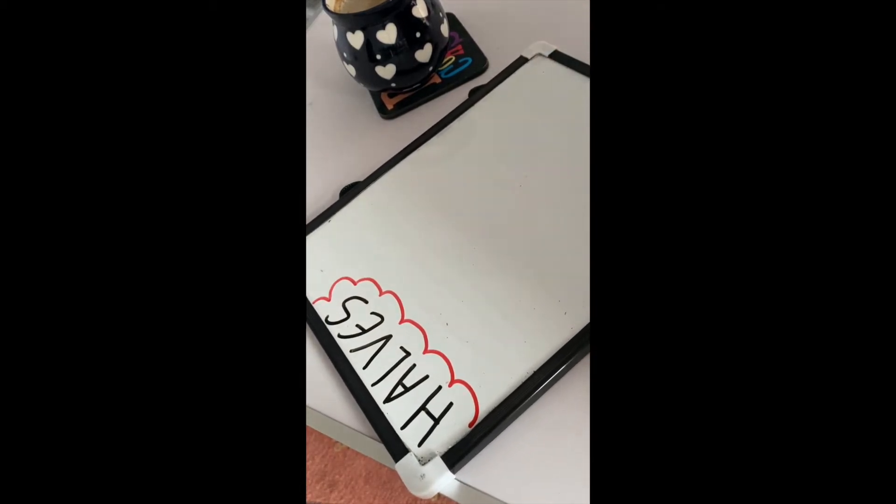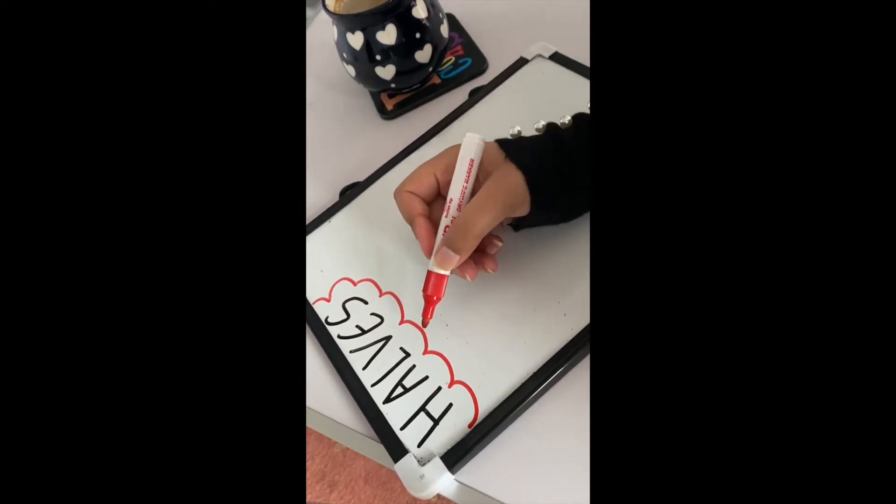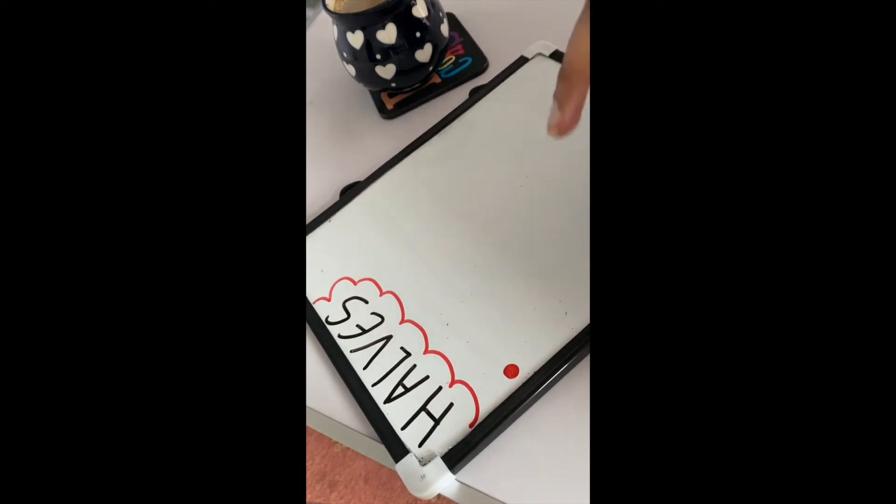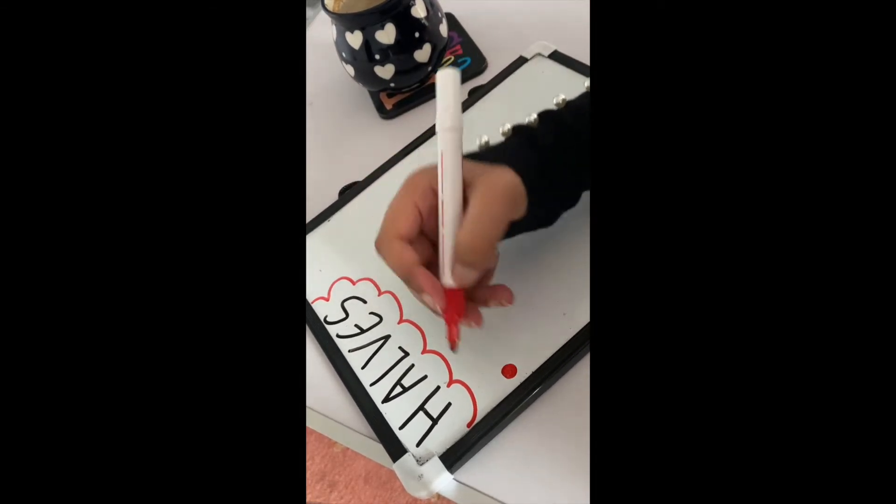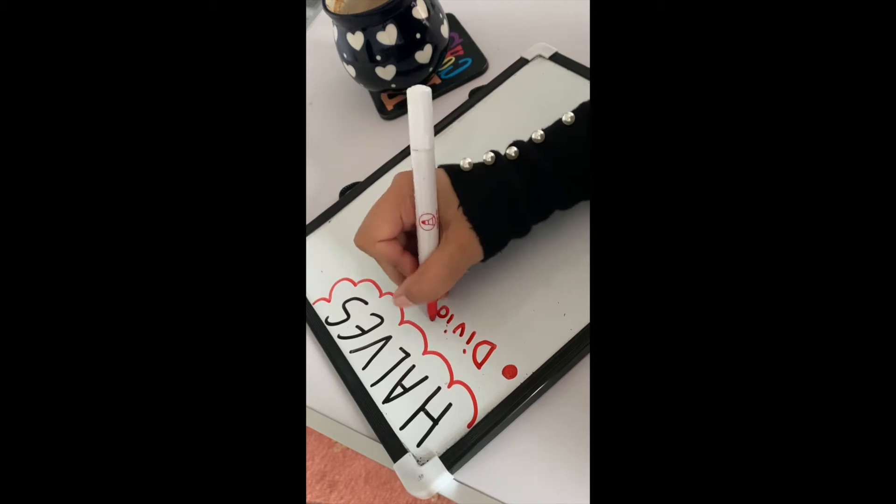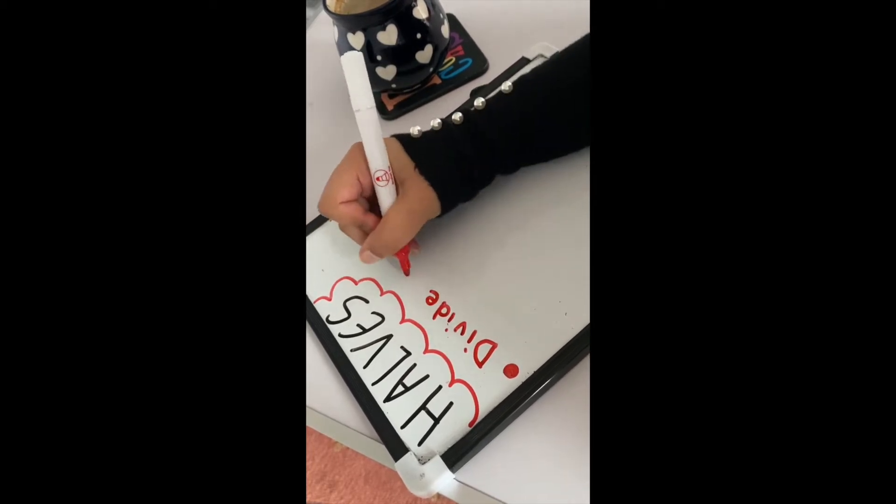I'm just going to zoom you in and we're going to start. Now it's very important for us to know what halves actually means and I'm going to find a simple way in which children can understand. What halving means is when you divide a number into two equal parts.